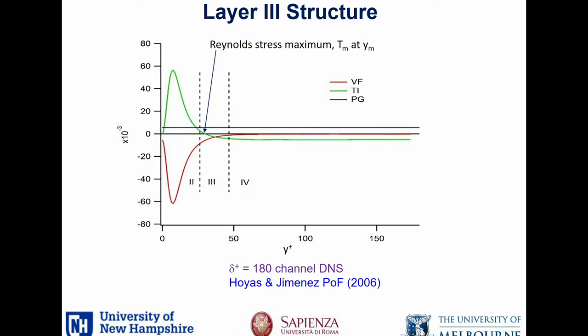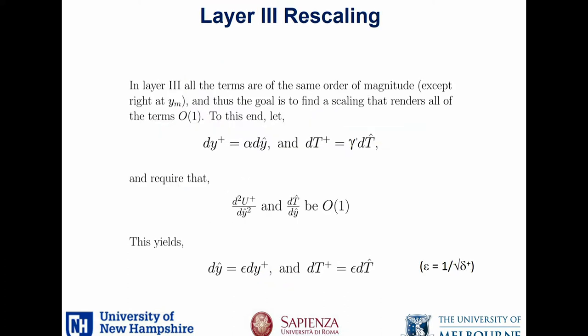It's in this region where we need to rescale. The reason we need to rescale is that if we write the equation in its inner-normalized form, then you have a small parameter, epsilon squared. Formally, one would expect that term to be small, but clearly it isn't in layer three — it's of leading order. This requires some rescaling across layer three.